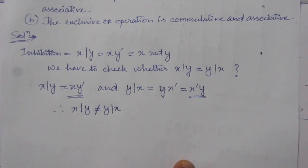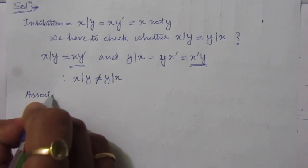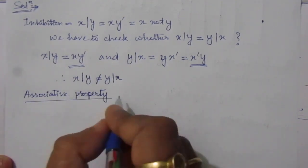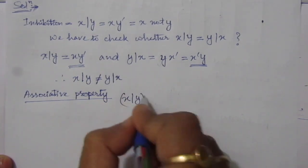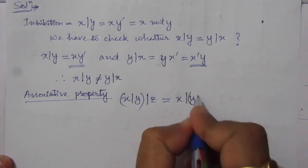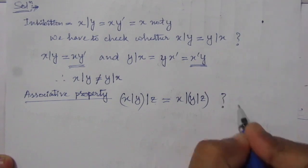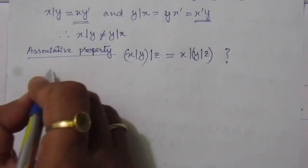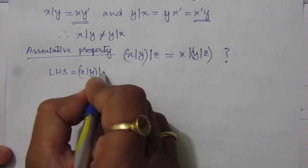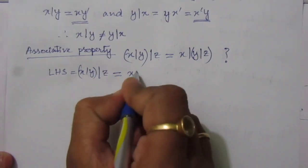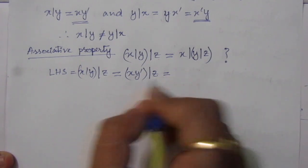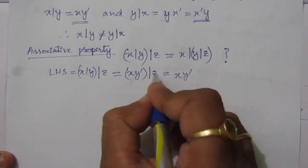Now we have to check whether inhibition is associative. As per the associative property with three input variables, we have to check whether (x inhibition y) inhibition z equals x inhibition (y inhibition z). Let us find the left-hand side: (x inhibition y) inhibition z. x inhibition y means x·y̅, so the left-hand side becomes x·y̅·z̅.